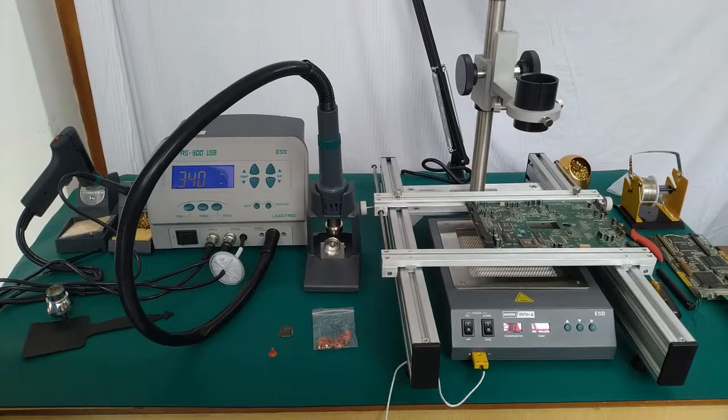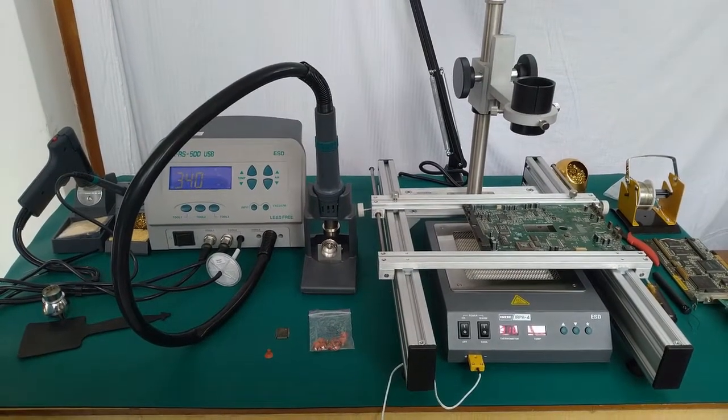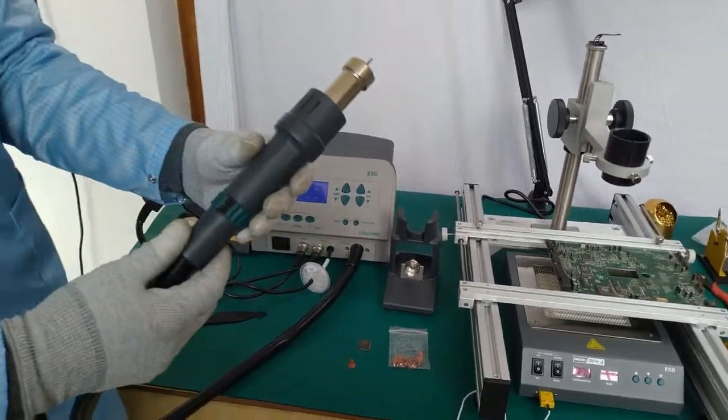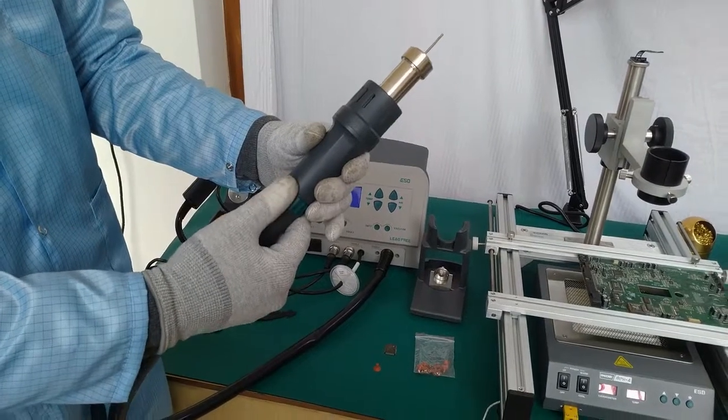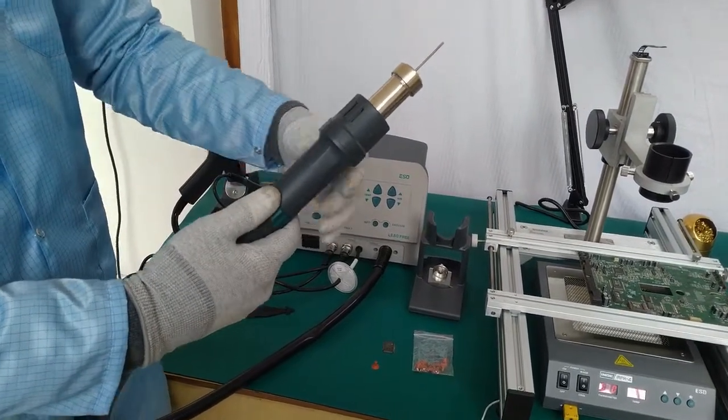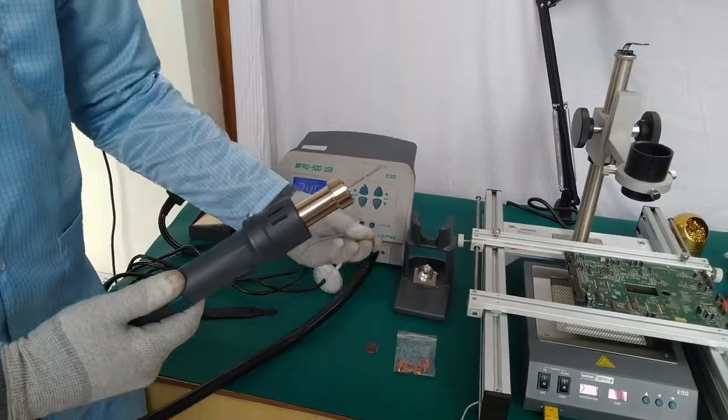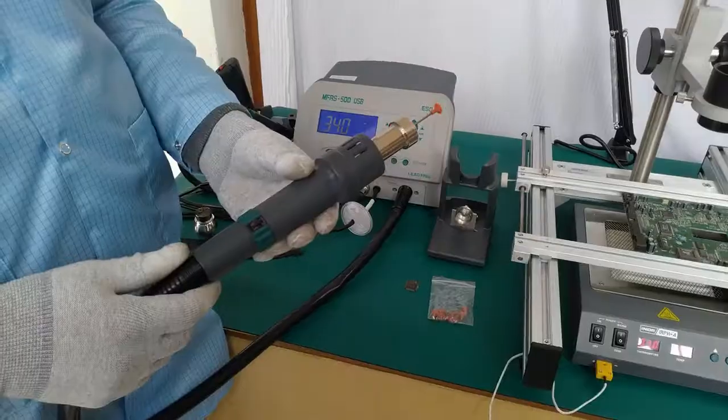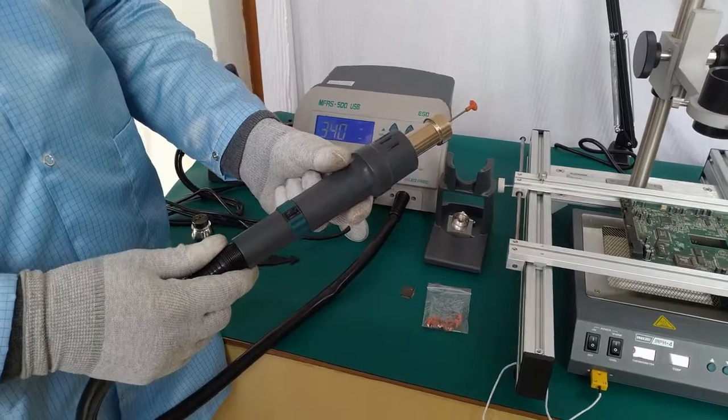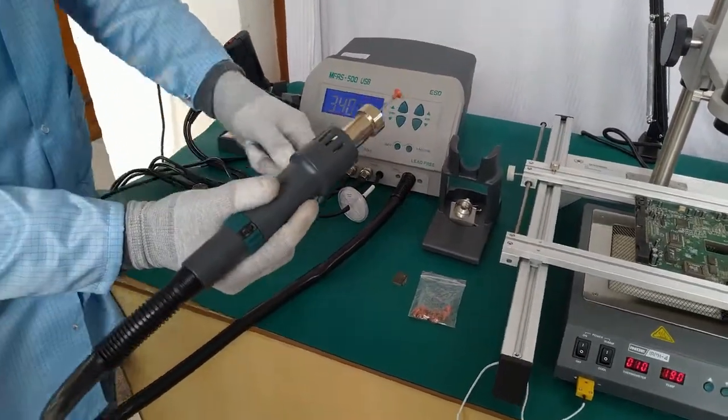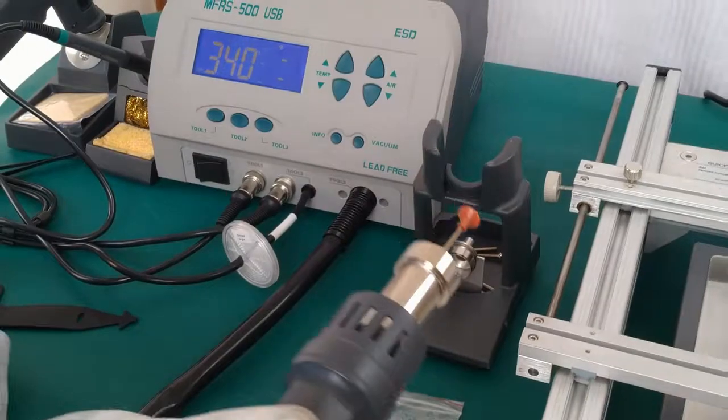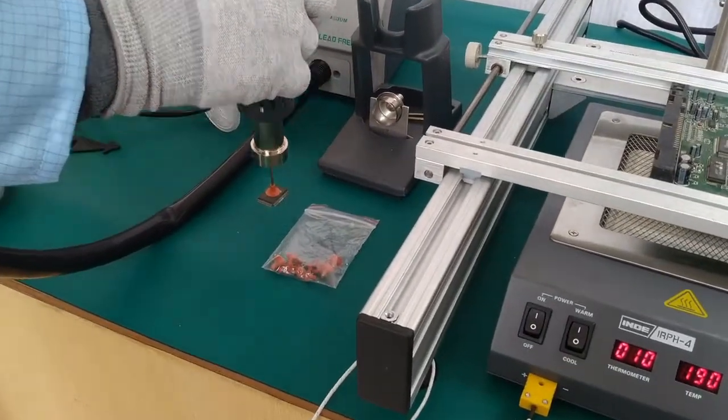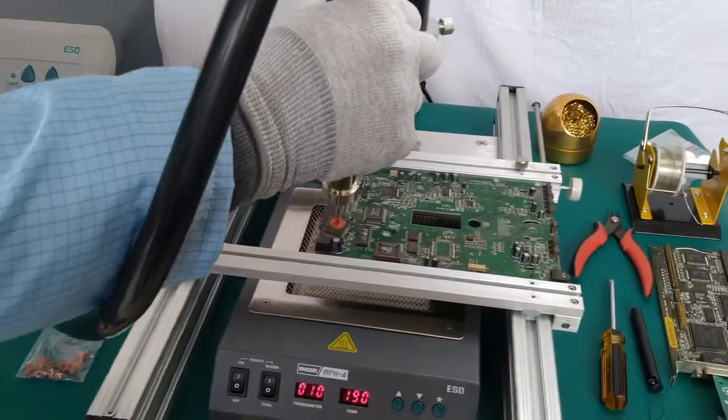The rework system also features an inbuilt vacuum pickup which can be extracted by rotating this knob. A rubber insert pad should be fixed on top of this vacuum inlet. Vacuum can be activated by pressing the vacuum button on the front panel. This feature can also be used for pick and place of SMD ICs.